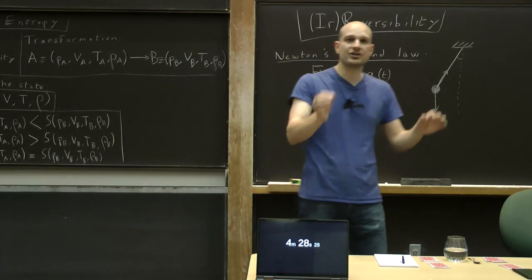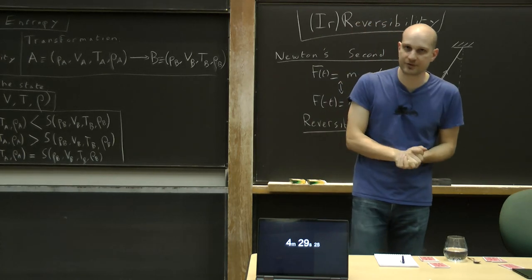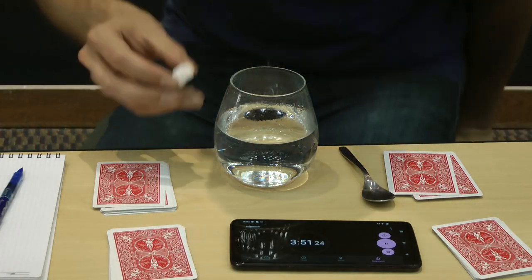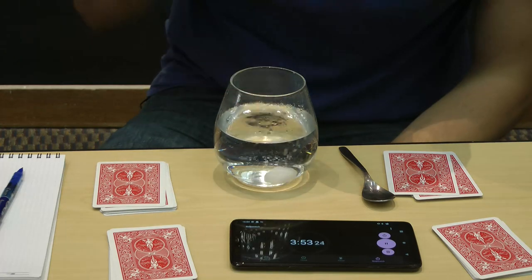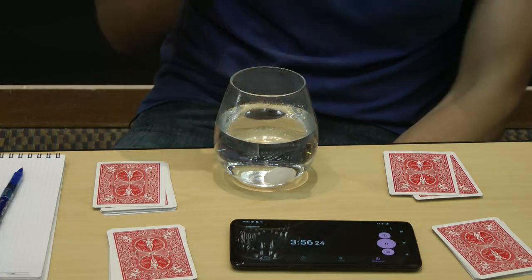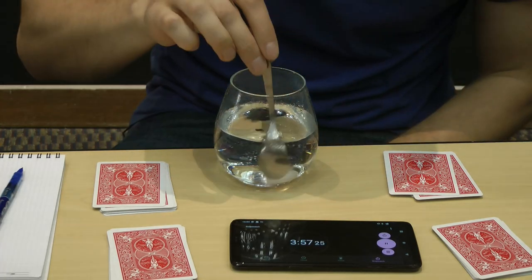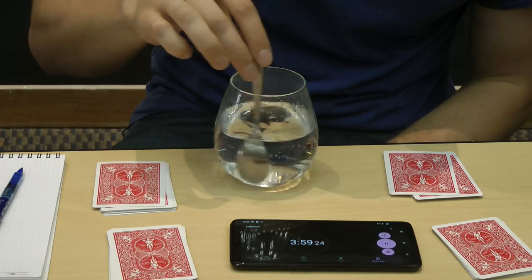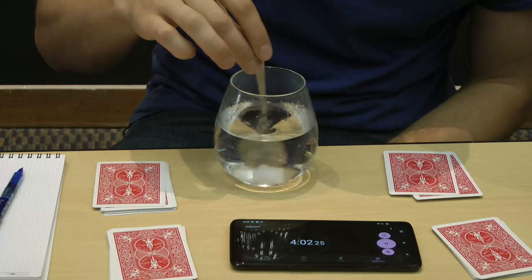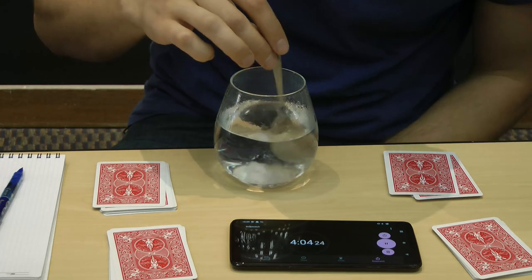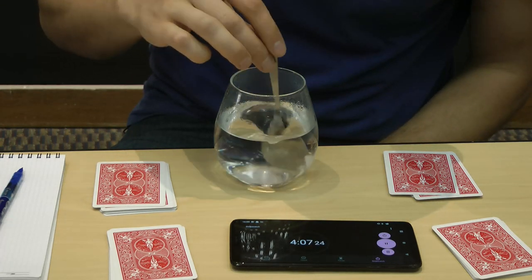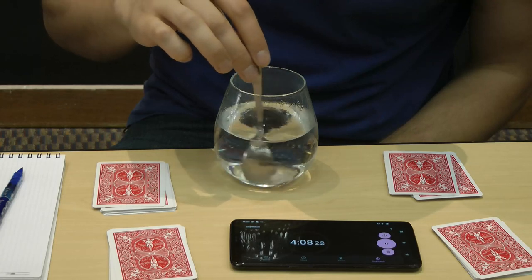Let's discuss another example in which the law is not reversible. What we have here is a glass of hot water and a sugar cube. I'm going to put the sugar cube in, and with the spoon, I'll help it dissolve. And what we observe is that the sugar cube breaks up and slowly dissolves into the water.